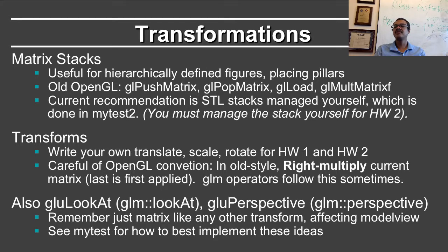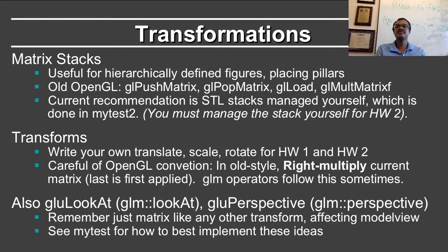Be somewhat careful of OpenGL convention. In old-style OpenGL, one right-multiplies the current matrix, which essentially means the last command in code is the first applied. GLM operations essentially follow this, but when you are doing the multiplication you need to be careful to follow this. In old OpenGL, we also had commands like gluLookAt and gluPerspective, which have the GLM equivalents of GLM::lookat and GLM::perspective. These are just matrices like any other transform — they right-multiply the top of the stack. If you are stuck on how to implement these concepts in homework two, look at the MyTest sequence of demos, which will give you some ideas of how to best implement these.